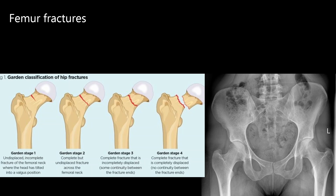We can also classify hip fractures based on how severe the fracture is. This is called Garden classification. Stage 1 is an incomplete fracture. Stage 2 is complete but not displaced. Stage 3 is partially displaced. Stage 4 is completely displaced.